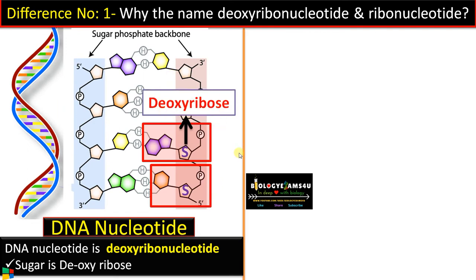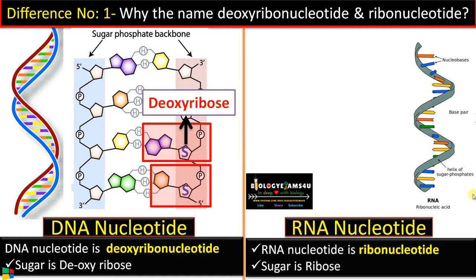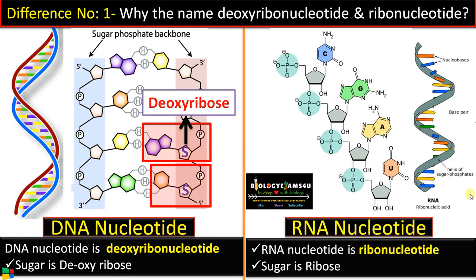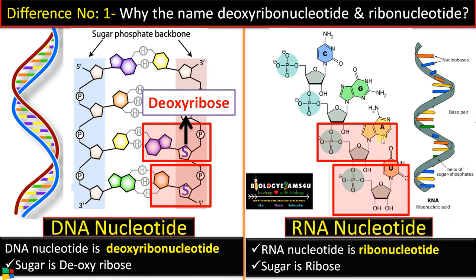That is why it is called deoxyribonucleotide. RNA is single stranded. RNA is also made up of nucleotides joined by phosphodiester bond. This is the first nucleotide and this is the second nucleotide. In the case of RNA, the sugar is ribose — that's why it is called ribonucleotide.